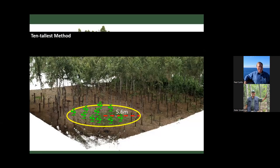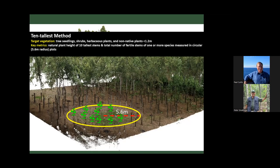With the 10 Tallest method, you can use it with tree seedlings, shrubs, or herbaceous plants — really any type of vegetation less than 1.2 meters high. You set up a 5.6-meter radius plot and measure the 10 tallest woody seedling stems, or for flowering species, the total number of fertile stems within each plot. Selection of plots is based on availability of vegetation and there's no set number of plots per site.